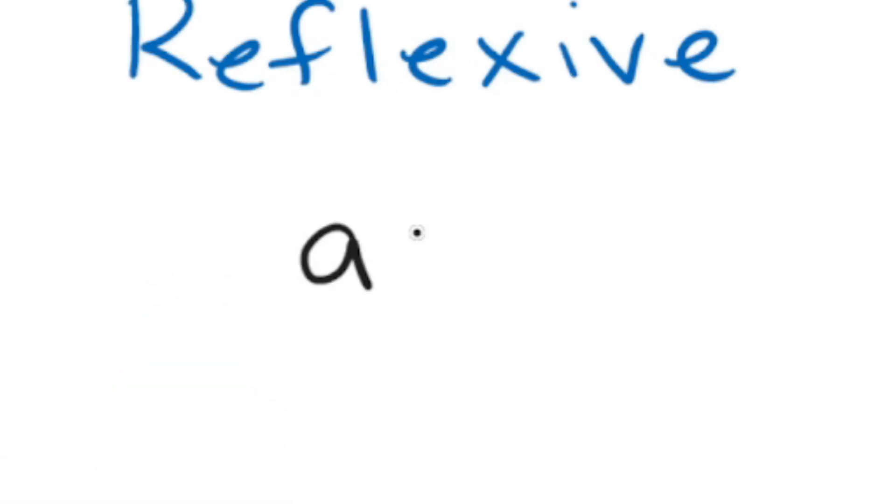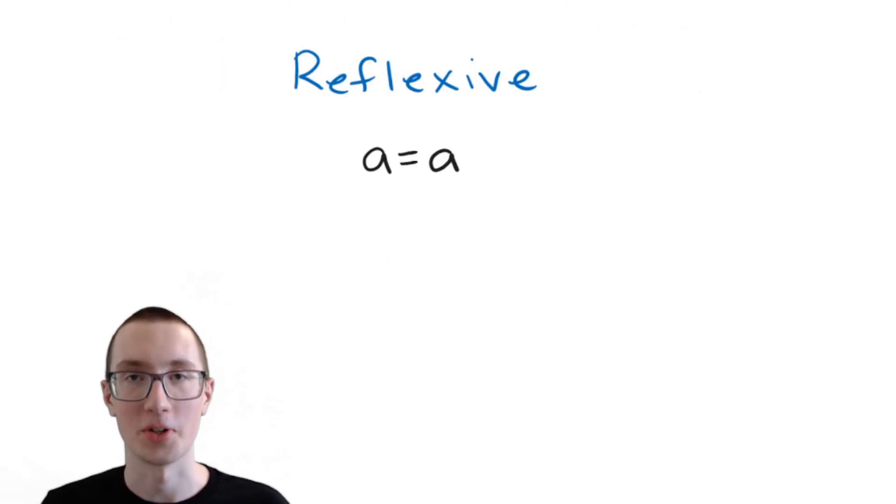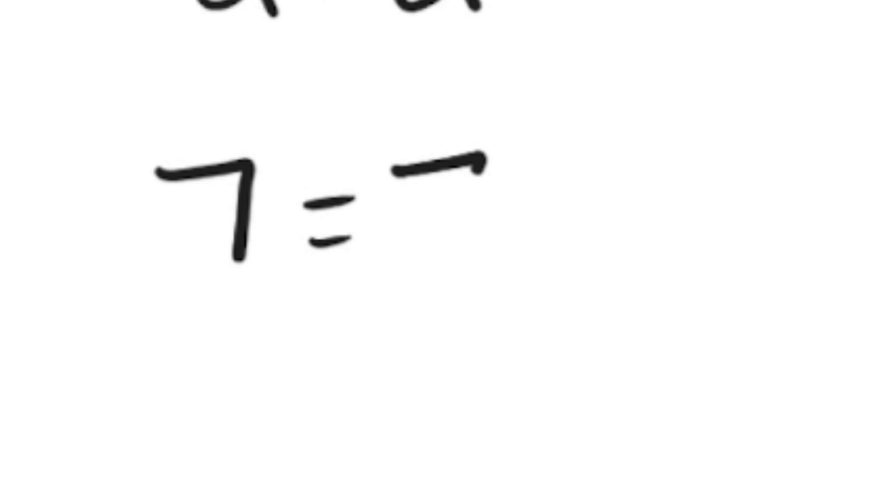and the reflexive property is so obvious that it can be confusing. Reflexive says A equals A. So in other words, if you have the number 7,